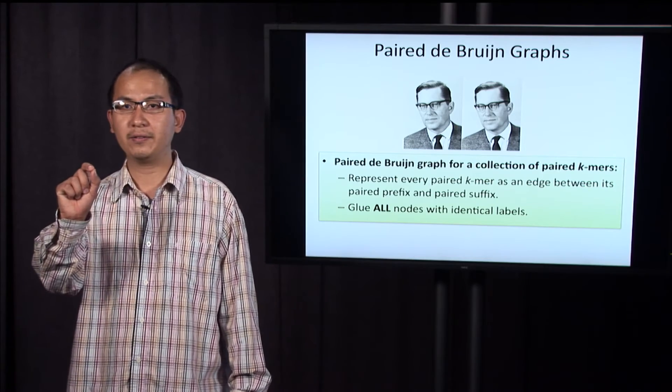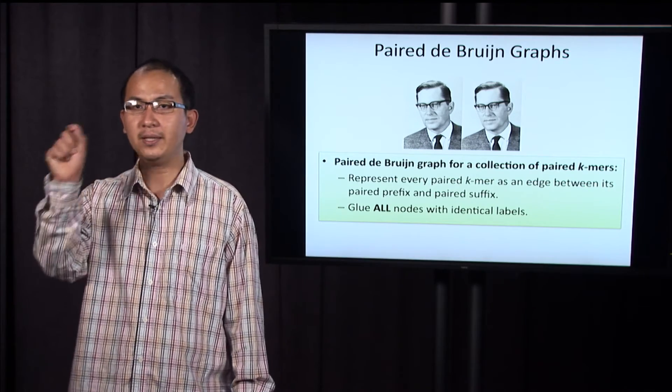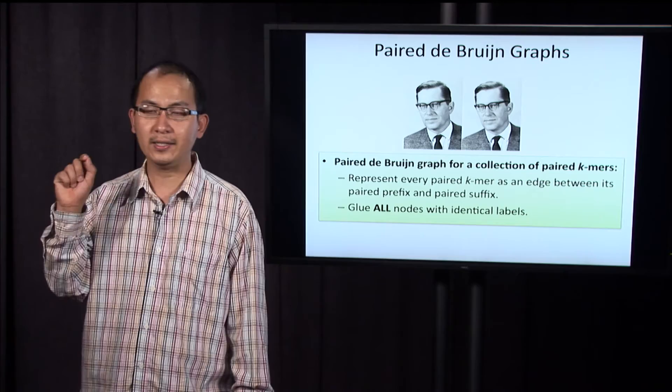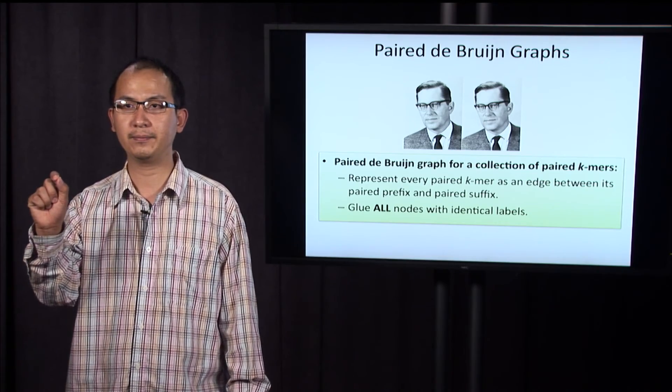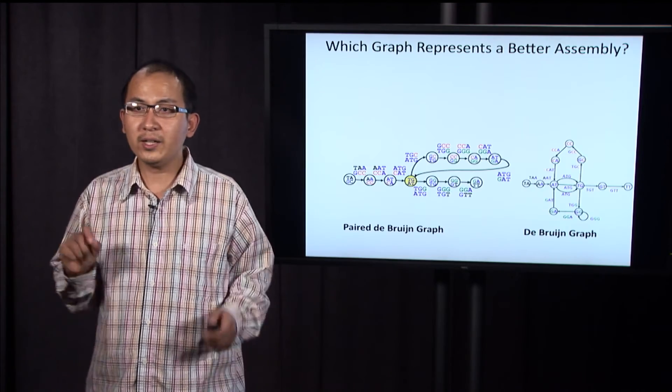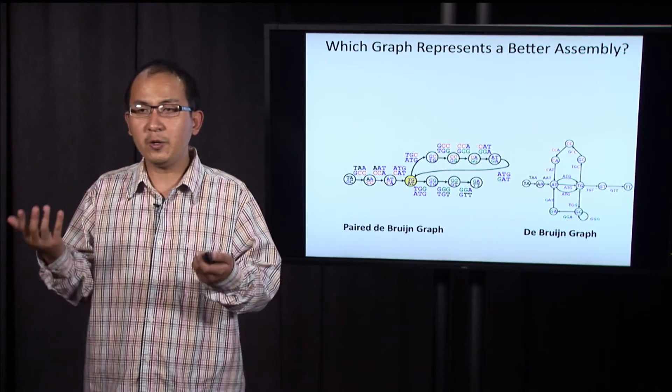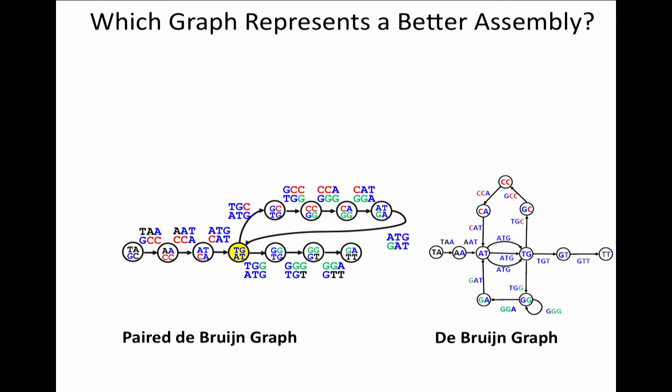In the paired de Bruijn graph, the genome is an Eulerian walk in the paired de Bruijn graph. But what is the point? In the de Bruijn graph, we also have this property. The genome is also an Eulerian walk in the de Bruijn graph.